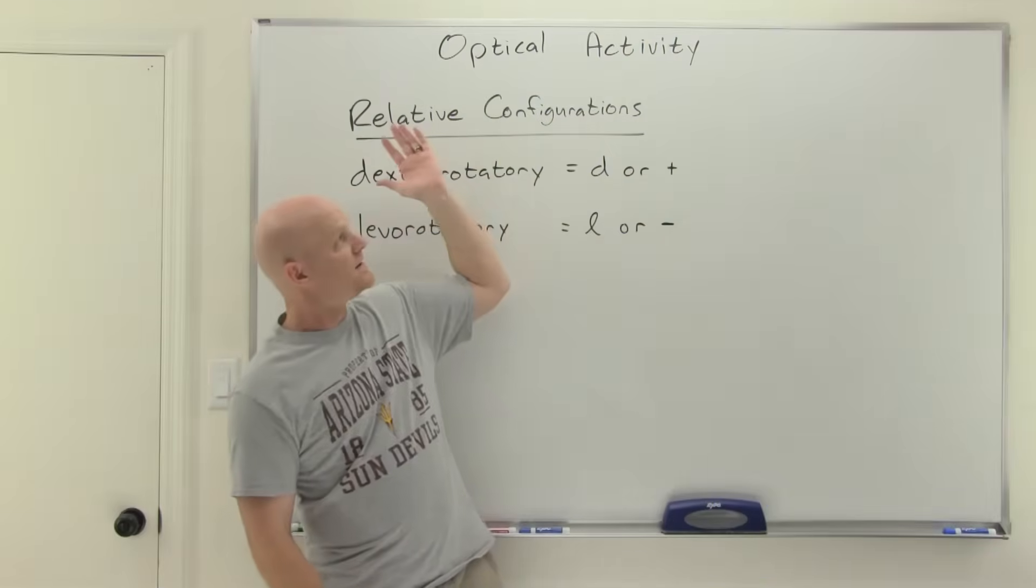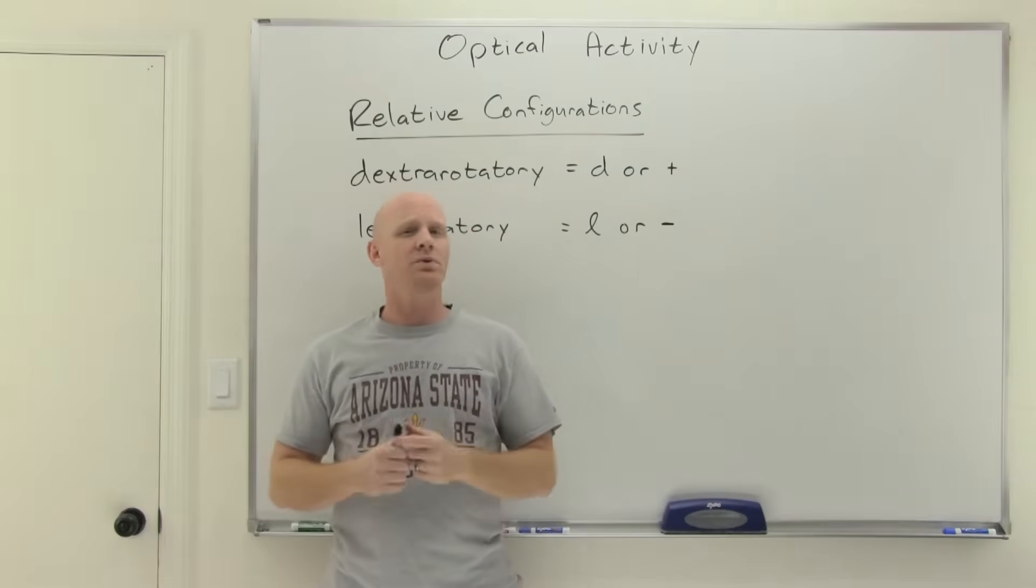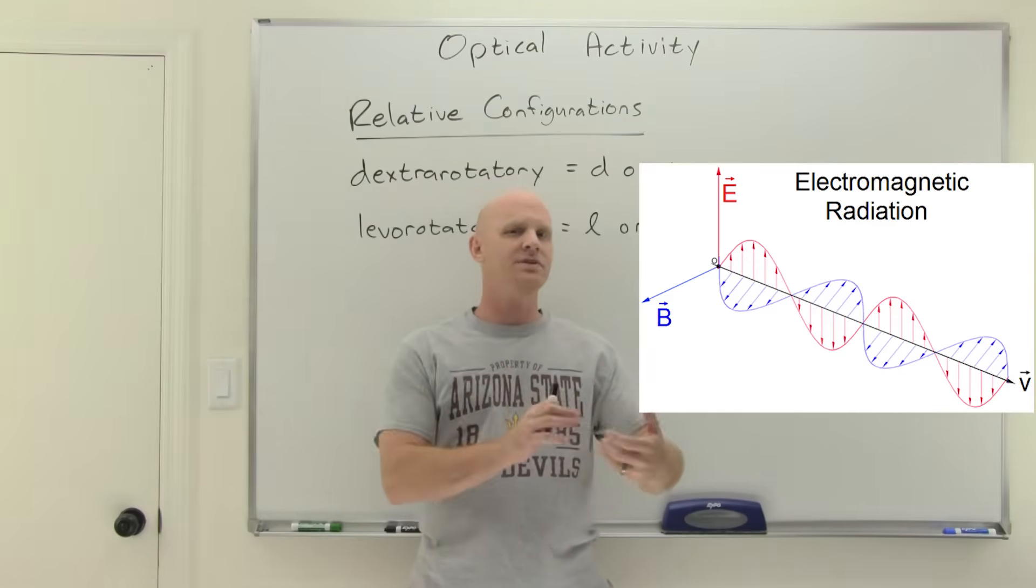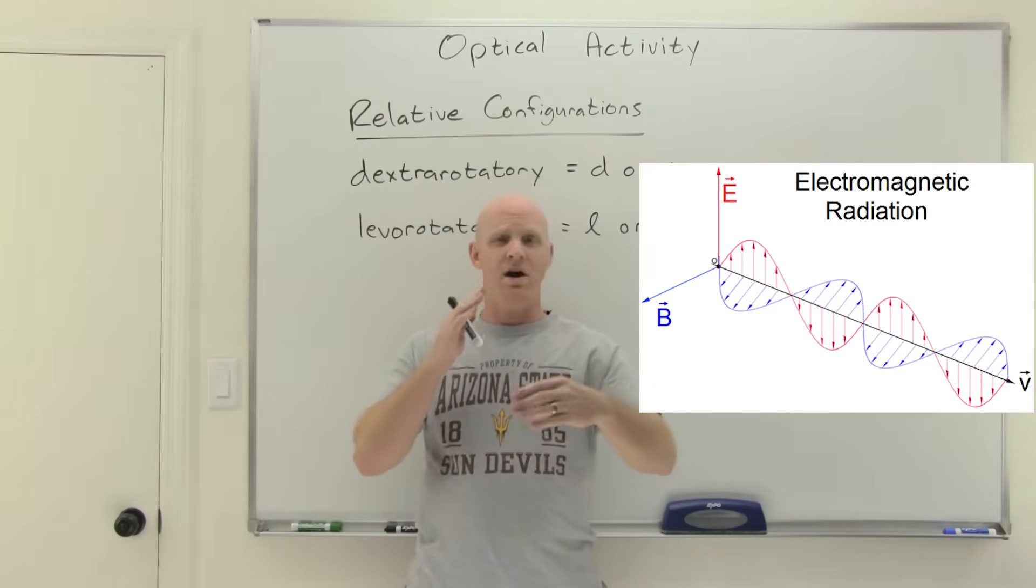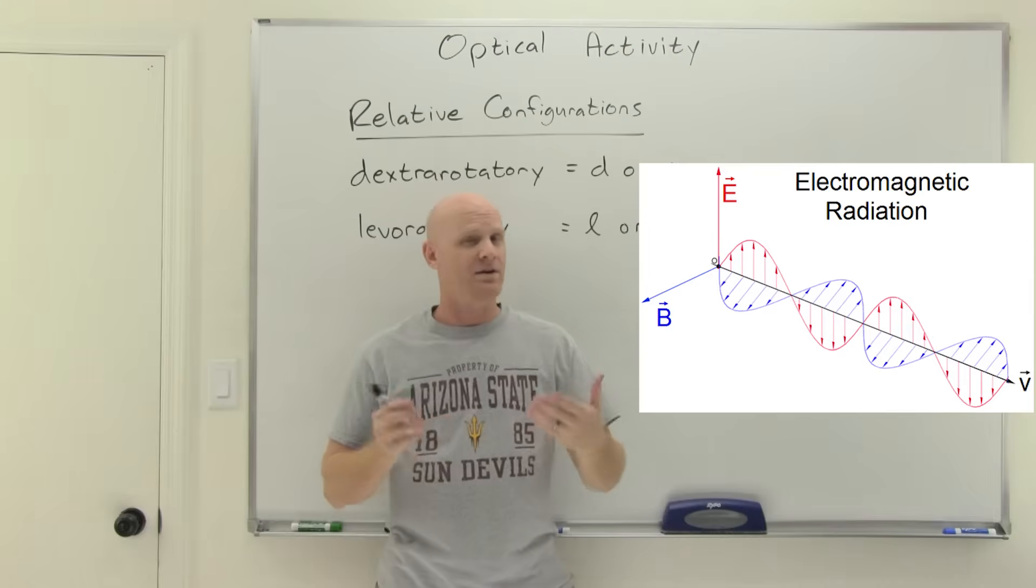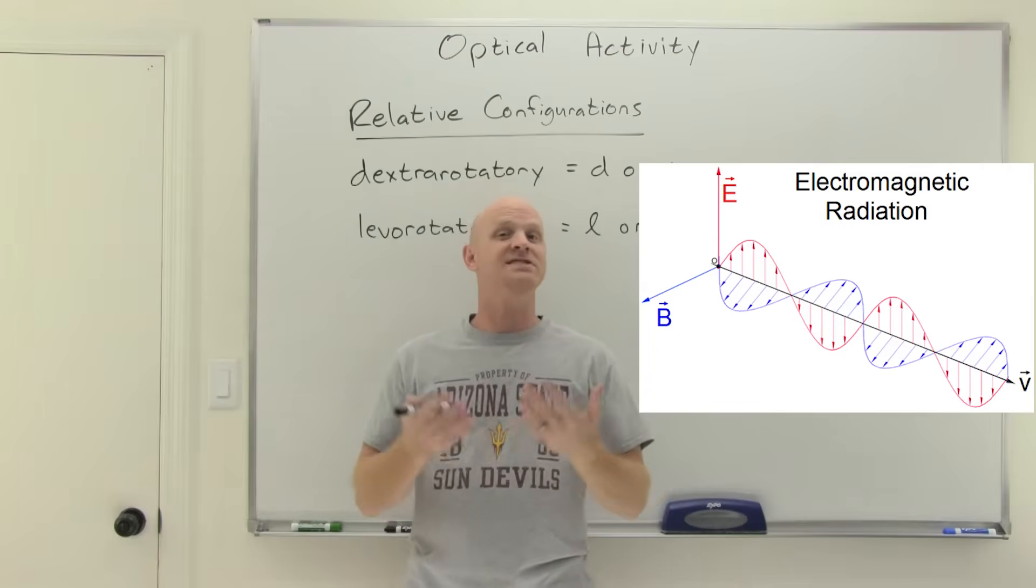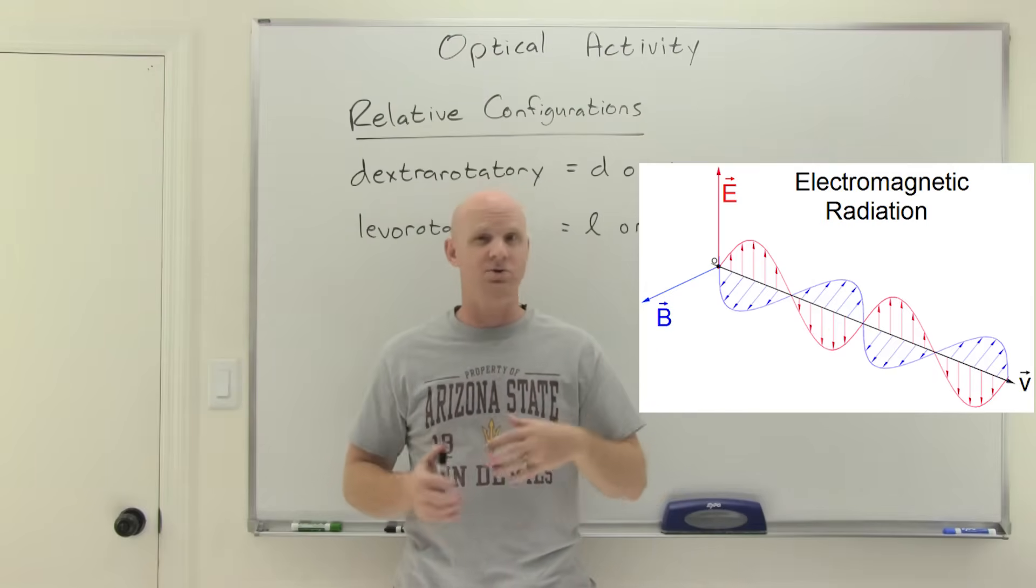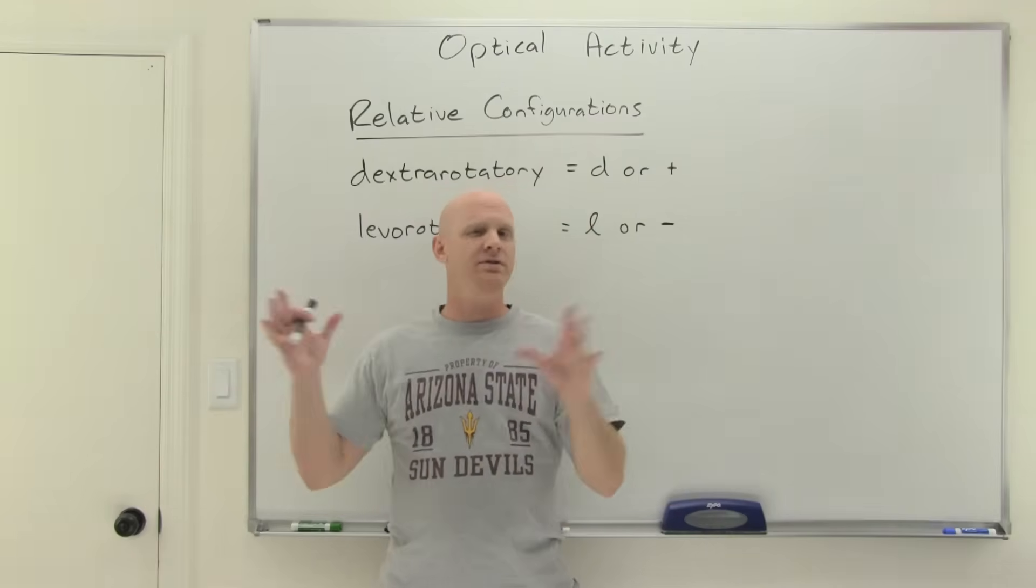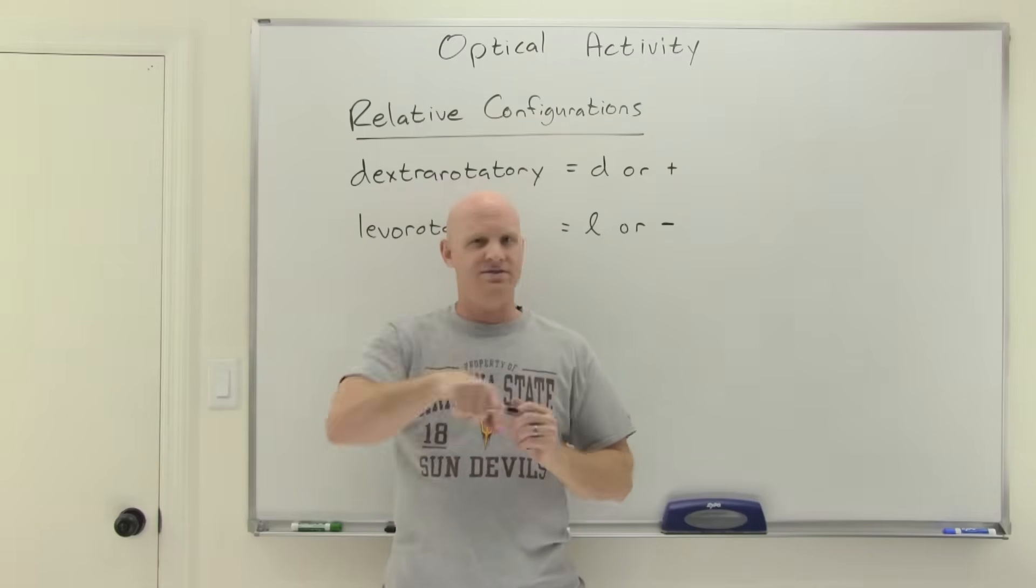Alright, so we introduced optical activity a little bit earlier in this chapter. And we talked about what's called plane polarized light. And I'll put up a little diagram on the board here. Light has both an electric field and a magnetic field associated with it. And they're orthogonal to each other, oriented 90 degrees apart. And so every photon of light has a specific orientation associated with it. When you've got unpolarized light, it means that all your photons have any kind of orientation, just random assortment of all the different orientations around 360 degrees.